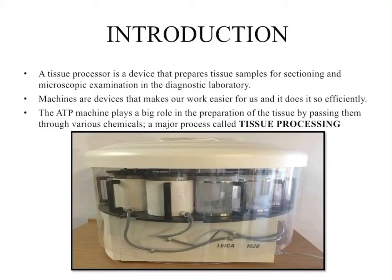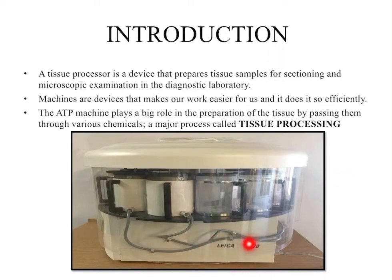The introduction is: it is a device that prepares tissue samples for sectioning and microscopic examination in the diagnostic laboratory. As you can see, there are different beakers with different reagents. After adding reagents, the machine is open and the tissue can move from one jar to the next. I will show you the next picture so you can see how it moves.